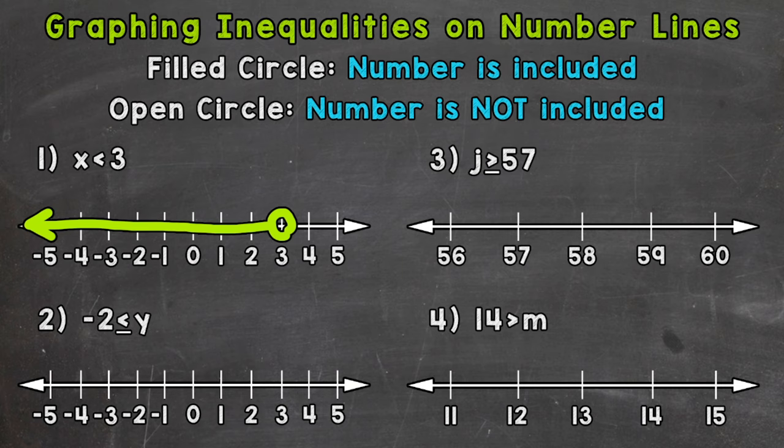For example, if we say x equals 0 — right here x equals 0 — 0 is less than 3, so that would be a solution. And so on for all values less than 3. We have an infinite amount of solutions, and that's what the arrow represents. We used an open circle because 3 is not included in our solutions.